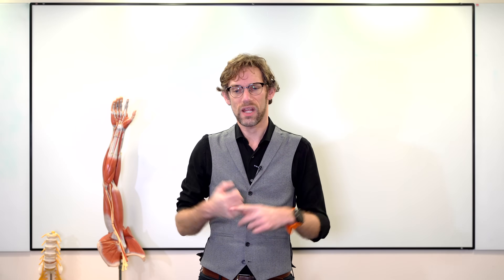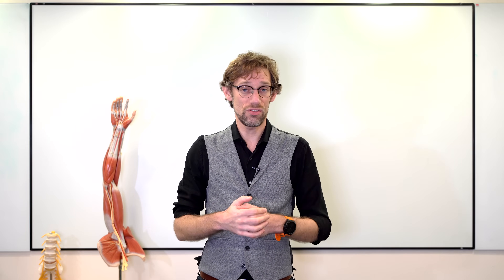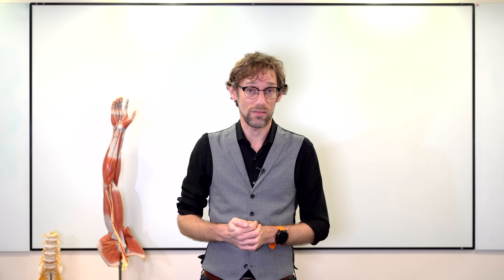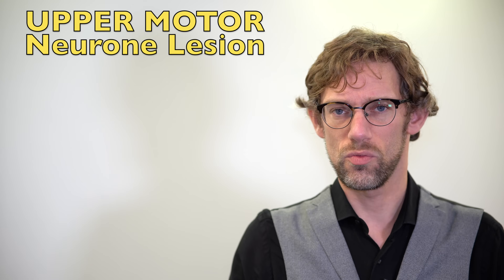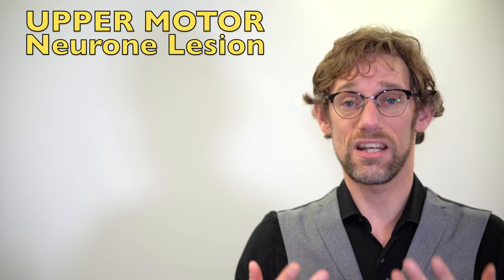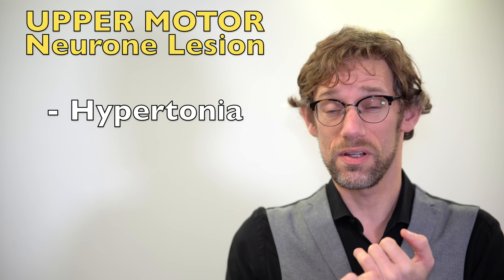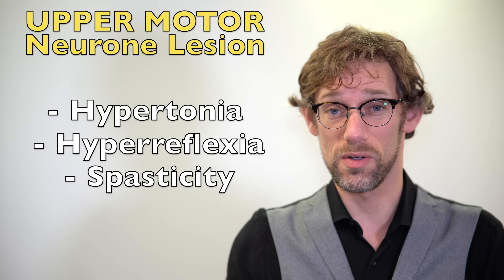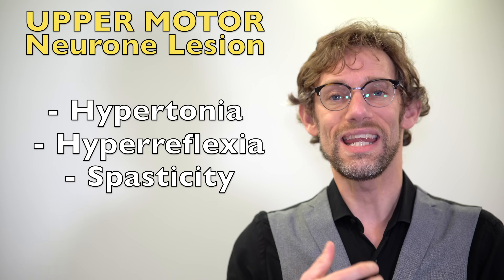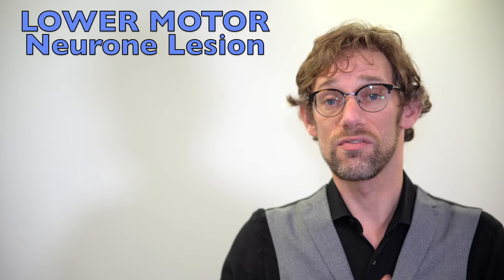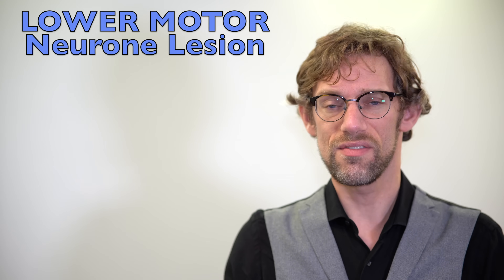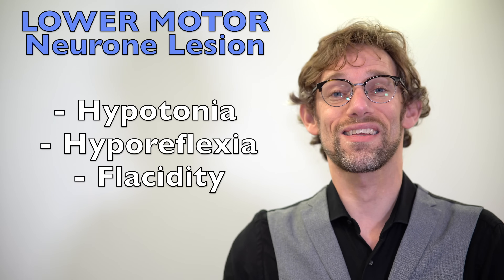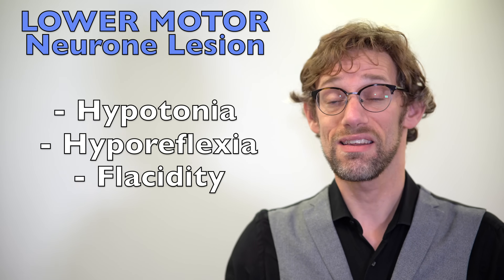Those same issues with an upper motor neuron lesion are going to affect any reflex that we have. So with an upper motor neuron lesion, everything is increased — we've got hypertonia, we've got hyperreflexia, and we've also got spasticity of the muscles, so it's much less easy to move. Conversely, with a lower motor neuron lesion, everything decreases — we've got lower tone, lower reflexes, and we've got flaccidity to the muscles.